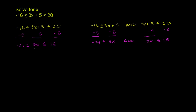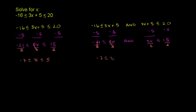Now, to isolate x we divide by 3, and we have to do it to every part of the inequality. Since 3 is positive, we don't have to change the sign. Dividing every part by 3 gives us negative 21 divided by 3 is negative 7, which is less than or equal to x, which is less than or equal to 15 divided by 3, which is 5. This is equivalent for both forms: negative 7 is less than or equal to x and x is less than or equal to 5.